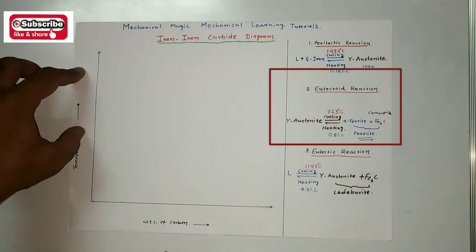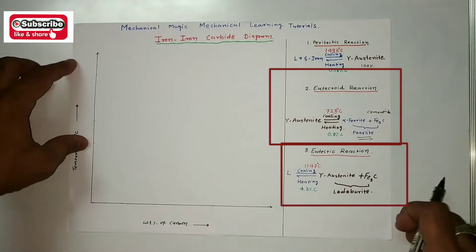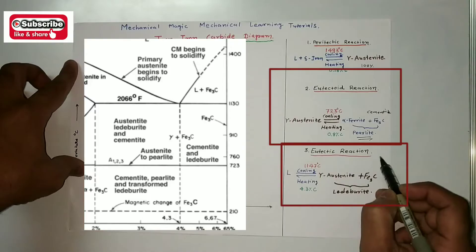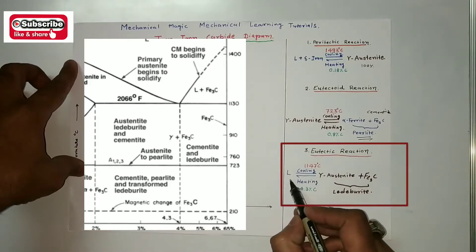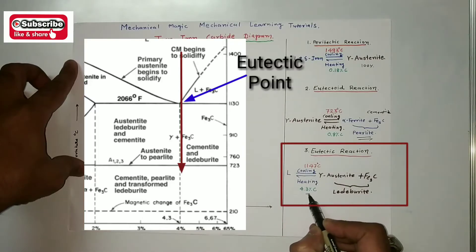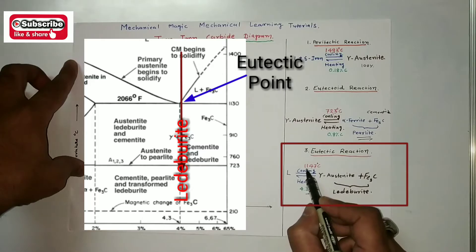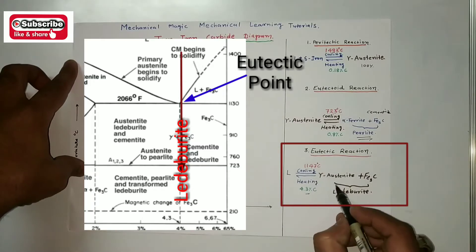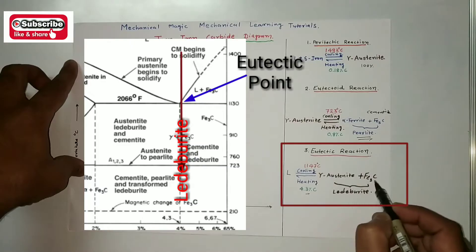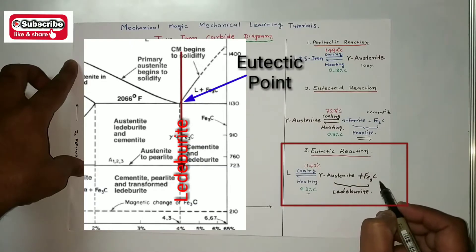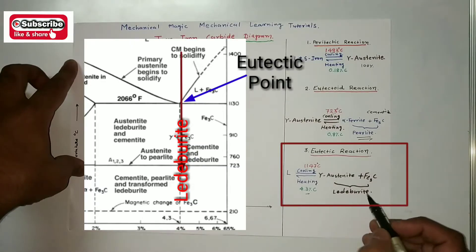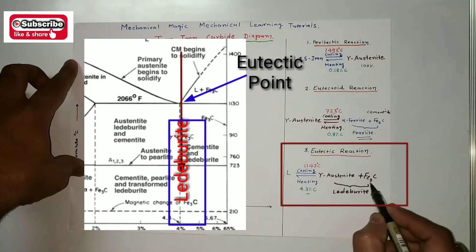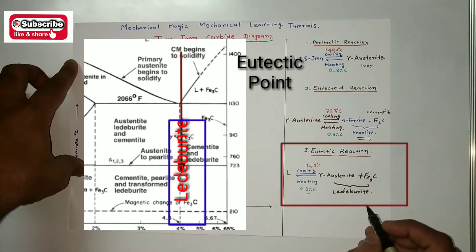The third reaction is the eutectic reaction. A liquid phase of 4.3 percentage of carbon at 1147 degrees centigrade converts into gamma austenite plus Fe3C — that means cementite. When gamma austenite and cementite form a proper mixture together, that is called ledeburite.